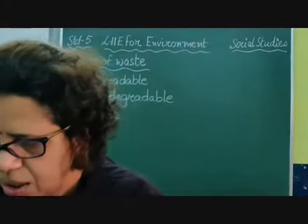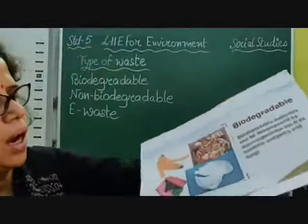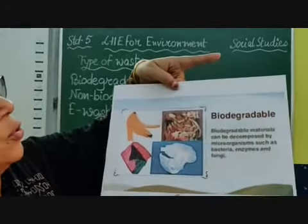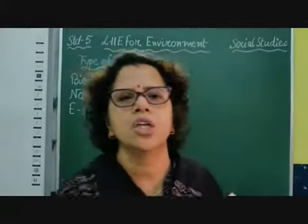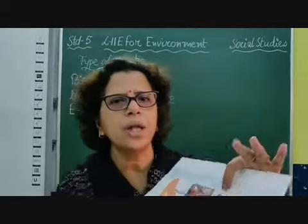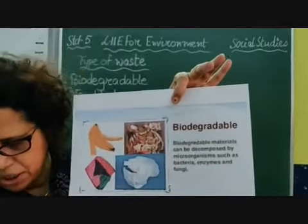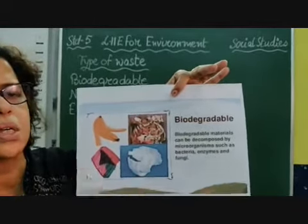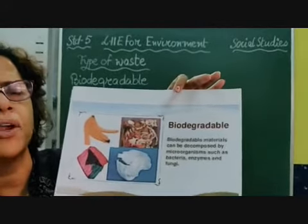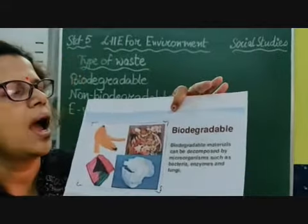Biodegradable waste — you can see here. Have a look, children. As you can see: banana peel, bread, paper, and some other waste like kitchen waste or vegetable peels. Biodegradable materials can be decomposed by microorganisms like bacteria and fungi, which rot the waste and mix it with the soil.